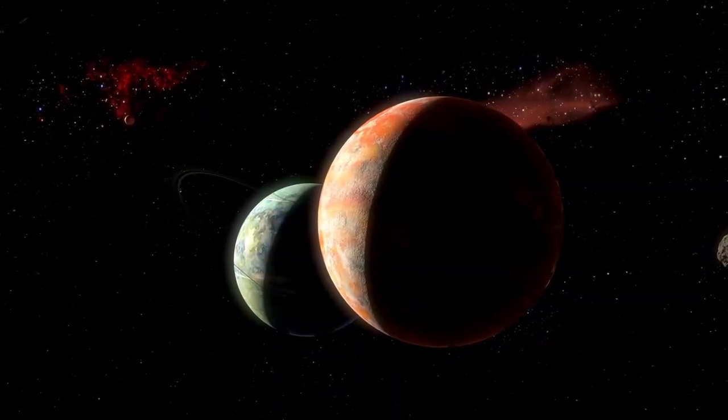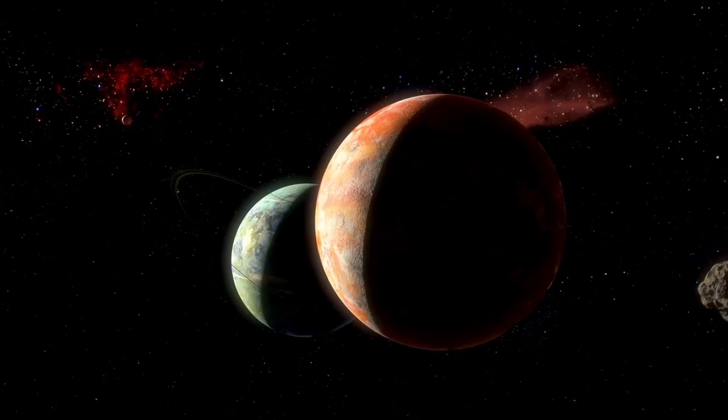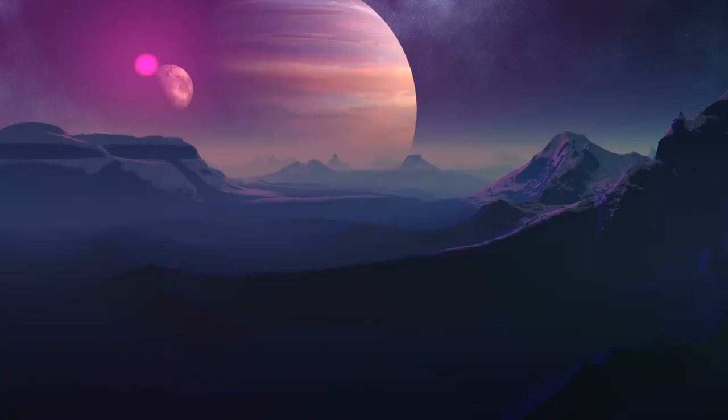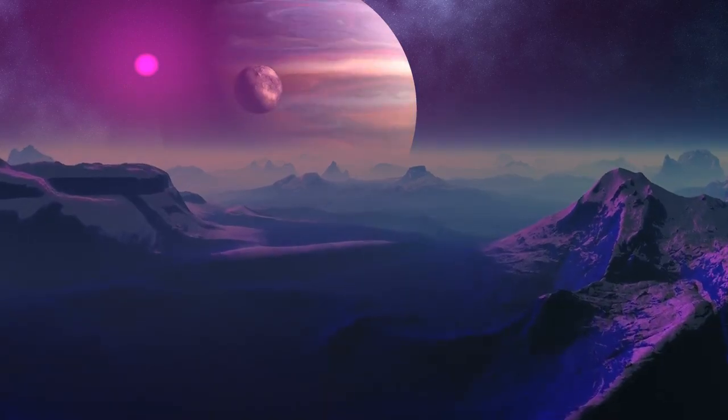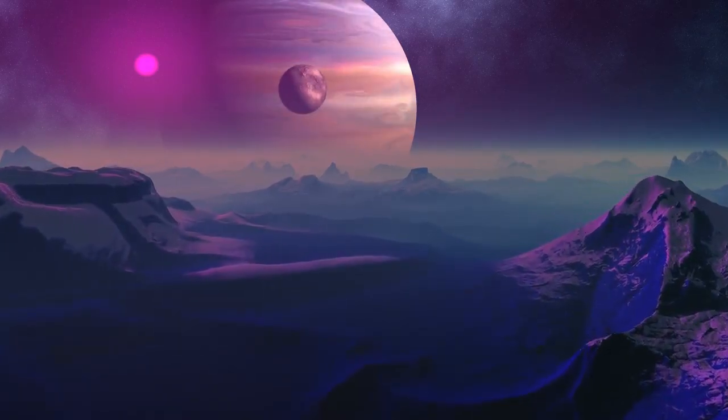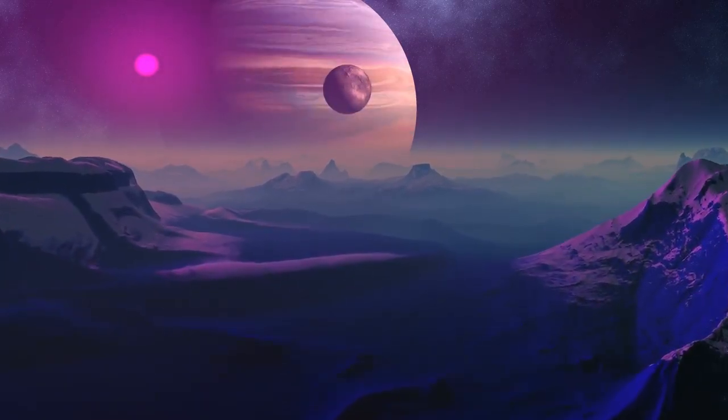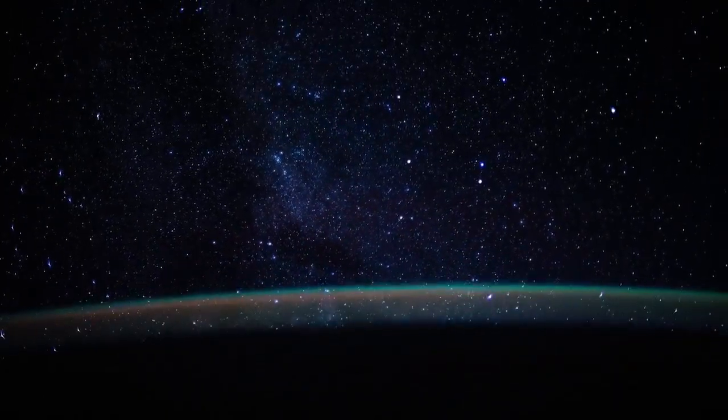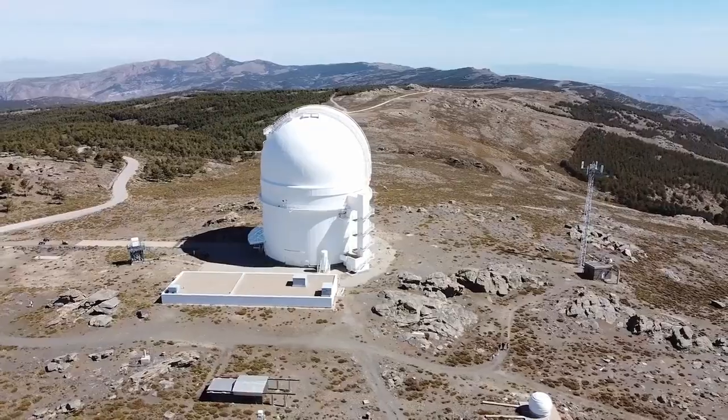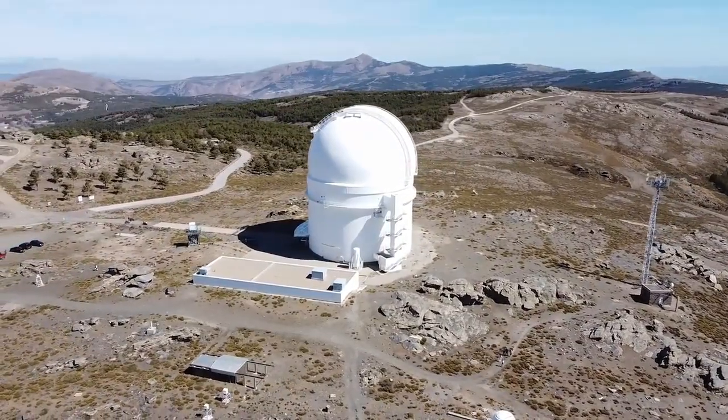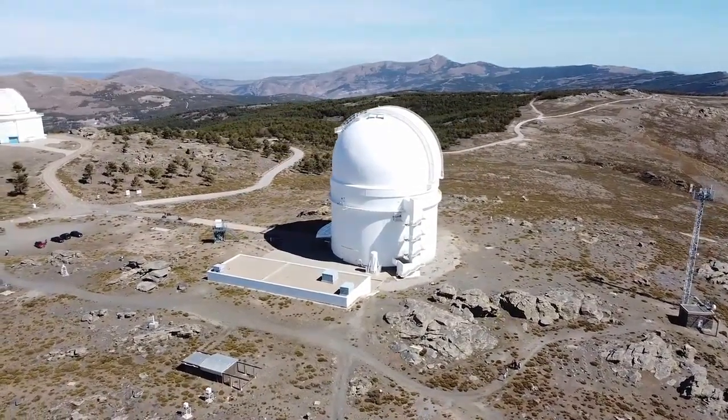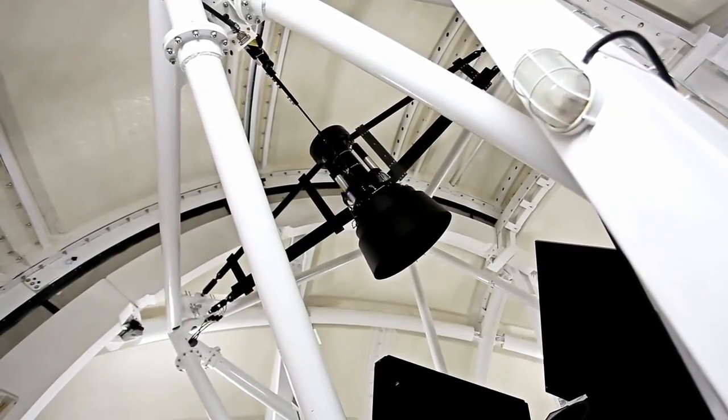But here's the catch. This system is only 23 million years old, still in cosmic infancy. The water is already there, waiting before planets even form. For decades, astronomers believed water arrived late in a planet's history. Webb just proved the opposite, that water exists from the beginning, shaping the birth of worlds long before they can ever host life. In that frozen halo of light, the telescope may have witnessed the first chapter of creation itself.